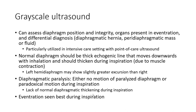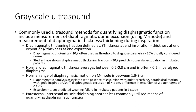Ultrasound can assess diaphragmatic position and integrity, and differentiate eventration from a diaphragmatic mass or fluid. A normal diaphragm should appear as an echogenic line that moves downward with inhalation and should thicken during inspiration due to muscle contraction. Diaphragmatic paralysis shows either no motion or paradoxical motion during inspiration, while eventration moves downward during inspiration.